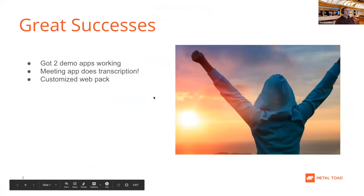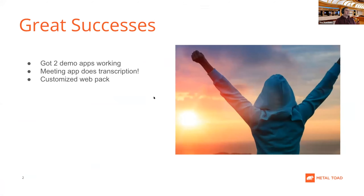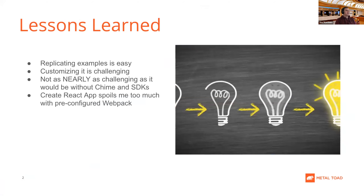Our wins: we were able to get the Electron app running as well as the meeting app, and we got the transcription working with the meeting app. We were also able to customize those Webpack scripts. Lessons learned: those AWS React examples are pretty simple to get going, though a bit more challenging without those SDKs. I am spoiled by Create React App and probably need to brush up on my Webpack skills.